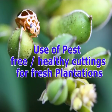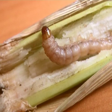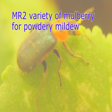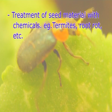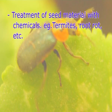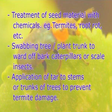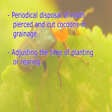Use of pest-free or healthy cuttings for fresh plantations: planting material serves as a carrier of pest material for the next generation — examples include leaf roller, scale insects, stem borers, etcetera. Growing of pest-tolerant varieties: use of pest-tolerant varieties minimizes the level of infestation; examples are MR2 variety of mulberry for powdery mildew, Mysore local for thrips, etcetera. Other prophylactic measures include treatment of seed material with chemicals to control termites and root rot, swabbing tree or plant trunk to ward off bark caterpillars or scale insects, application of tar to stems or trunks of trees to prevent termite damage, periodical disposal of moth-pierced and cut cocoons in drainage, and adjusting the time of planting or rearing.